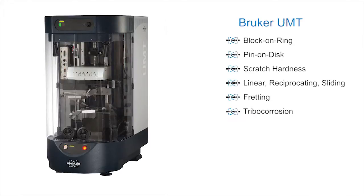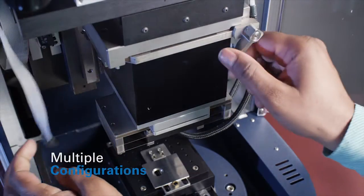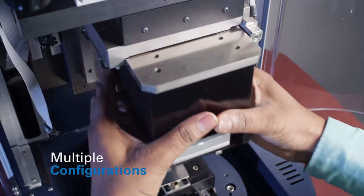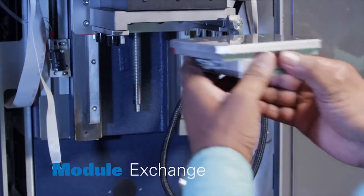We've extended our loading capability, but it still maintains the very unique features of modularity. You can put in a reciprocating stage, a rotary stage, a horizontal rotary stage, a high-speed reciprocating stage, all in the same platform and run loads from millinewtons, even nanonewtons, up to kilonewtons.